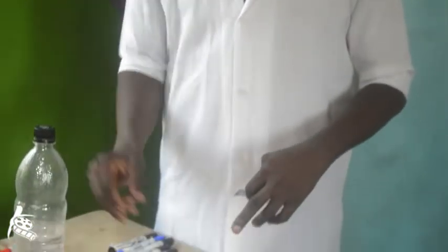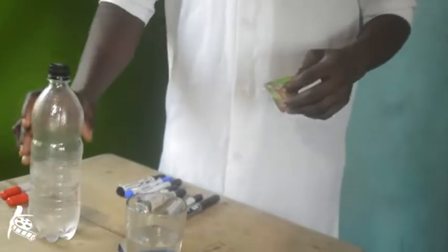I've decided to demonstrate how exothermic reaction could be seen in our daily life. This is our common Alka-Seltzer or sodium bicarbonate. It contains sodium bicarbonate, citric acid, and so on. I will pour it inside this glass cup with water.